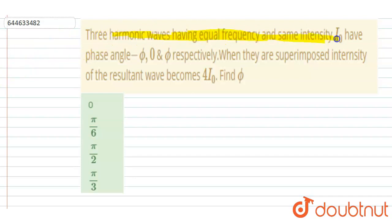having equal frequency and same intensity I₀ have phase angle -φ, 0, and φ respectively. When they are superimposed, the intensity of the resultant wave is found to be 4I₀. Then you have to find out the φ.